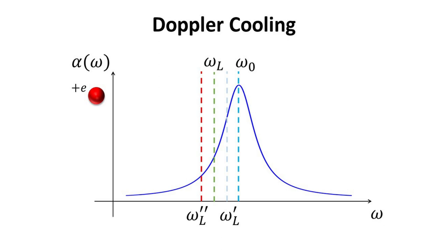Looking at the frequency distribution in the absorbance diagram, we can see that the photons from the right side laser, with frequency omega prime, are more often absorbed as their frequency is closer to the resonant frequency of the ion.